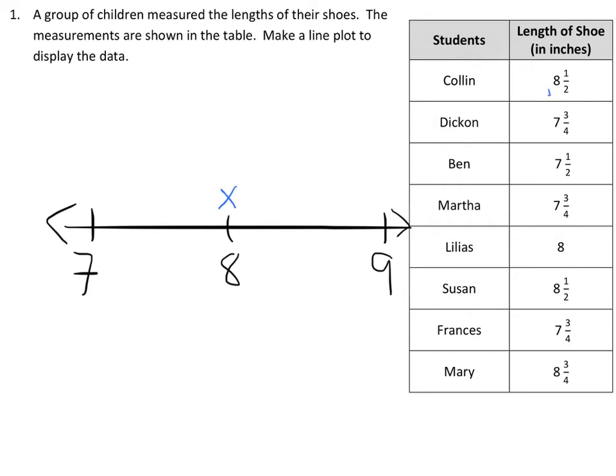I also have a couple eight and a halves, right? I have Colin, Lilius is done, and I have Susan, who also have eight and a halves. So I could go ahead and mark a half, and then say that I had two students at eight and a half.